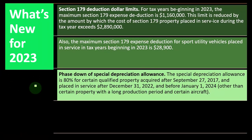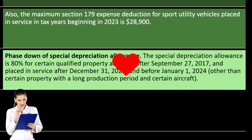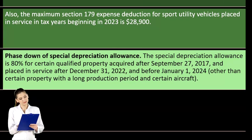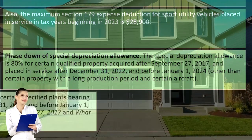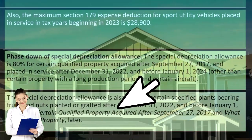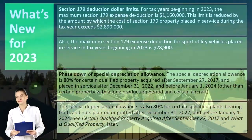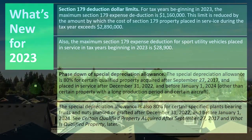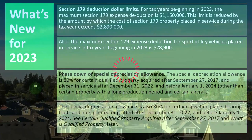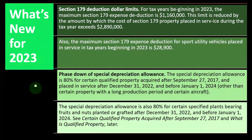Phase-down of the special depreciation allowance: the special depreciation allowance is 80% for certain qualified property acquired after September 27, 2017, and placed in service after December 31, 2022, and before January 1, 2024 — other than certain property with a long production period and certain aircraft. The special depreciation allowance is also 80% for certain specified plants bearing fruits and nuts, planted or grafted after December 31, 2022, and before January 1, 2024. See the section on qualified property acquired after September 27, 2017, for more details.